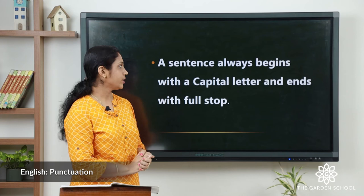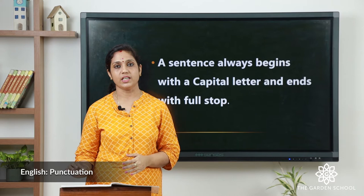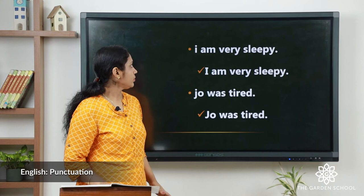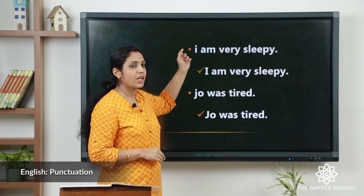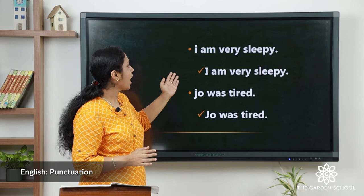A sentence always begins with a capital letter and ends with a full stop. The first letter in the sentence should be a capital letter, and after finishing the sentence you have to put a full stop — a dot — so that it is understood that the sentence is over. For example: 'I am very sleepy.' Here 'I' is written as a small letter, so we have to write 'I' as a capital letter to make it a proper sentence.